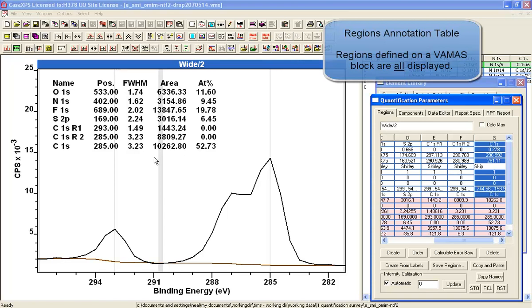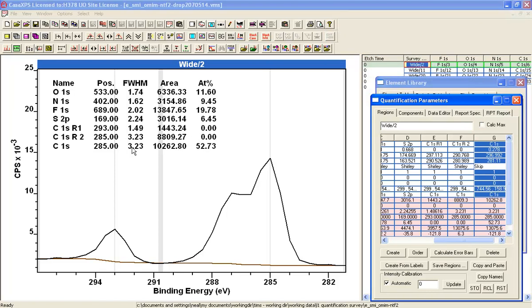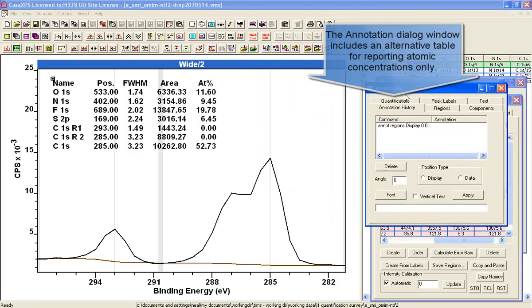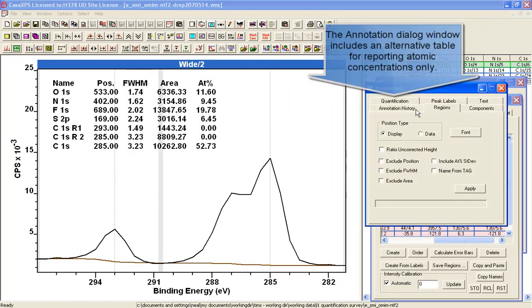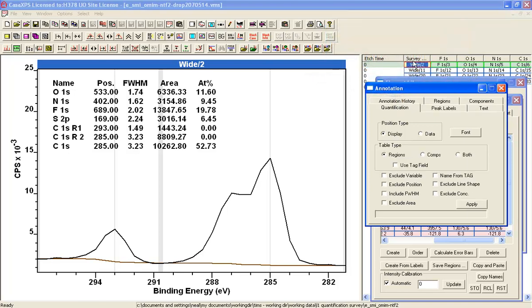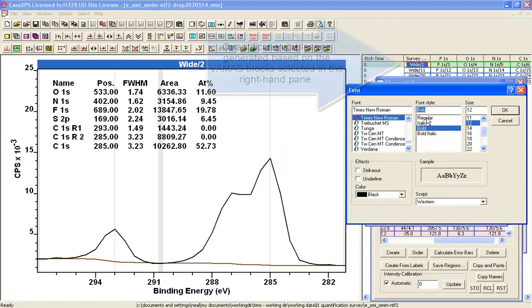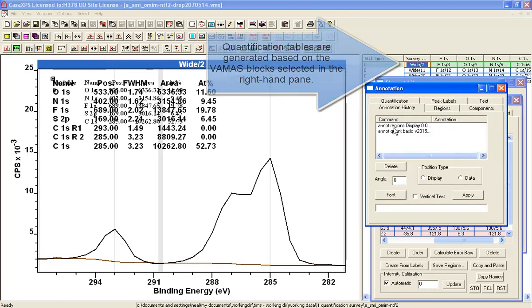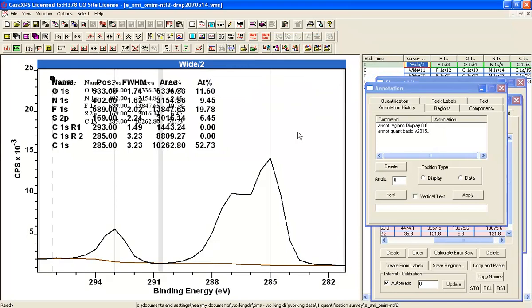Now, if I wanted to see a report that is just going to have the values that have RSFs that are assigned. In other words, the ones that will give me a contribution to the atomic concentration calculation. Then, I can create from the annotation dialog window. Rather than using regions, which is what you can see already, I'm going to go to the quantification tab, which will rely on what I've got selected in the right hand side. It's got regions selected and I can set myself a font and then say apply.